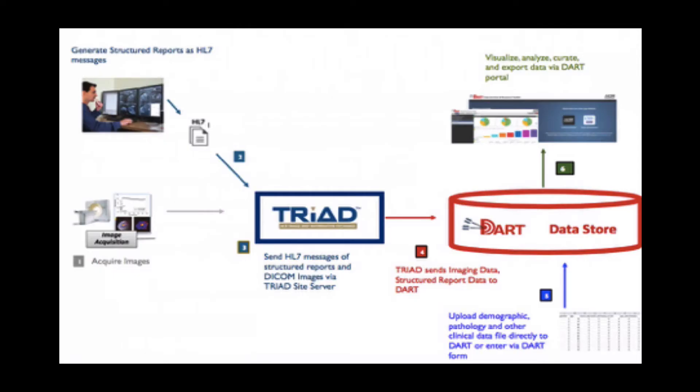The reason for these rules is because 95% of the data that we will need in the study will be extracted in an automated fashion from your radiology reports. An ACR server and software called Triad is going to read the radiology reports, extract the data, and send that to the ACR. Therefore, to help the server read your data, the field names have to be the same and the options for answers have to be the same.